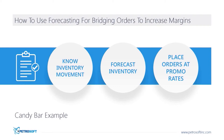By using the back office system's forecasting tools, you will be able to forecast the amount needed over a specific period of time for those thousands of SKUs in your stores. This information is then used to order what is needed for the store to bridge the time gap until the vendor's next promotional period, while taking advantage of the discounted rate and increasing gross profit margins.